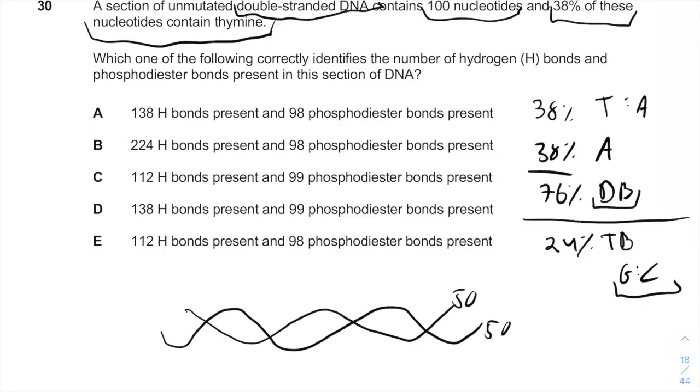In total, we have 112 hydrogen bonds. But how many phosphodiester bonds do we have? If you think about it, phosphodiester bonds occur between two nucleotides.